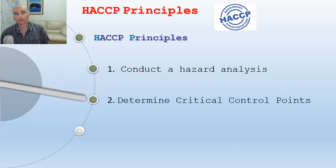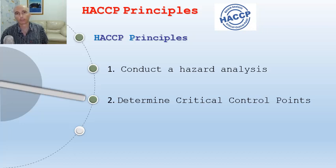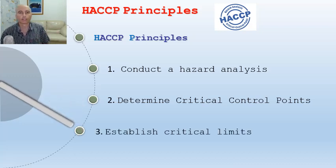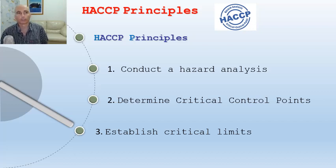Number two: determine critical control points. These could be temperature points — such as how cool the meat needs to be on delivery, the cool room temperature, how long you would prepare food and at what temperature, and at what temperature food should be cooked above. Number three: establish critical limits. For example, the cool room should be kept between 1 and 5 degrees, and when preparing food we don't want it left out for too long.